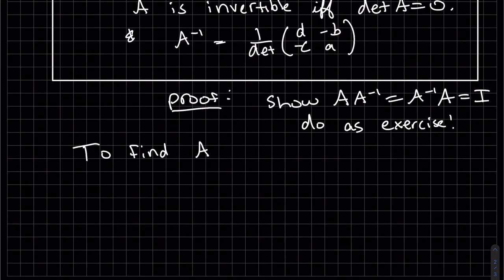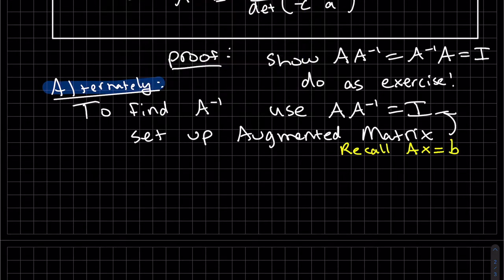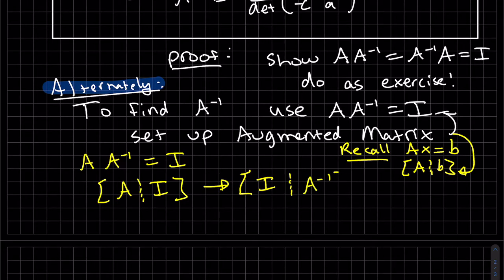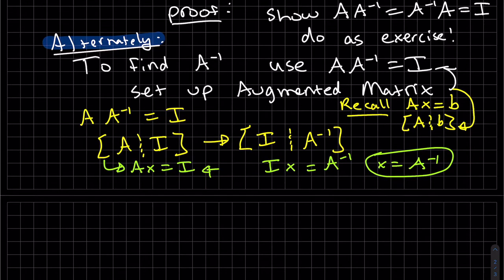Now to find A inverse alternately, and this will work for more than just a two by two, we're going to use the fact that A times A inverse equals I. We're going to set up the augmented matrix with this equation. When we have this equation A, B is our augmented. So here, we're augmenting I. We're going to row reduce. We're going to have I, and then I'm claiming that this will be A inverse. So if you write out these equations, this is Ax equals I from here. Here, it's I times our x is equal to A inverse. We can see that x is equal to A inverse. Okay, so that's how we're going to do it. Let's show an example.